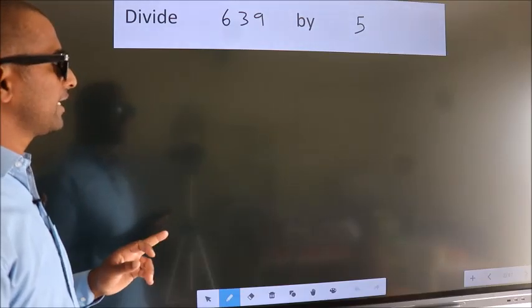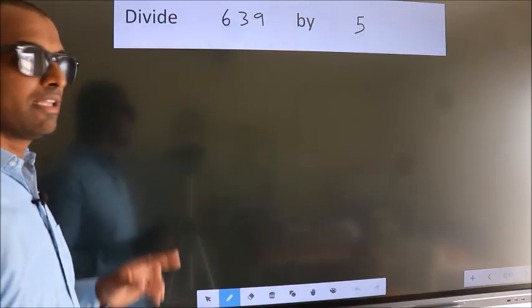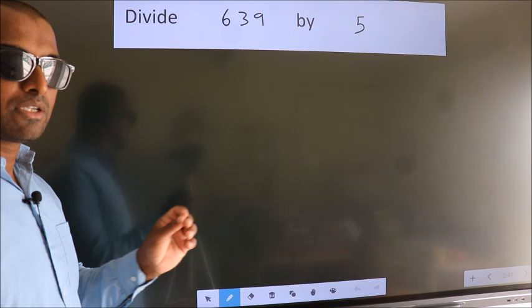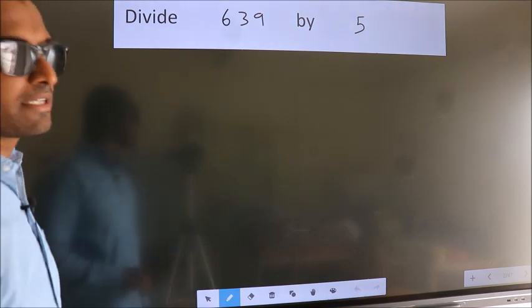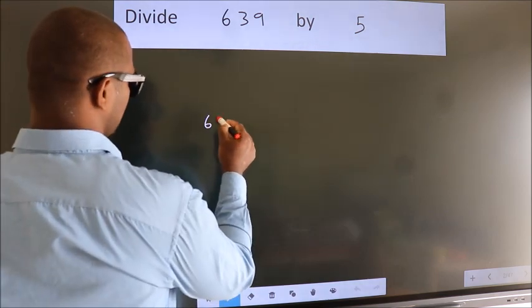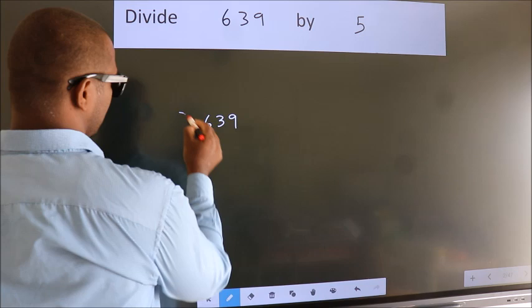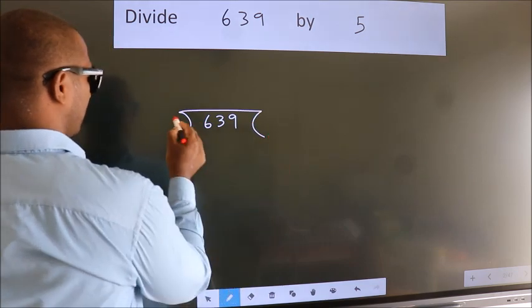Divide 639 by 5. To do this division, we should frame it in this way. 639 here, 5 here.